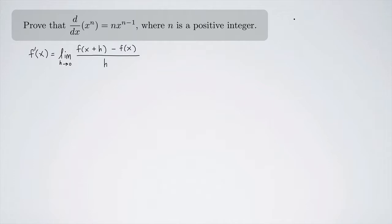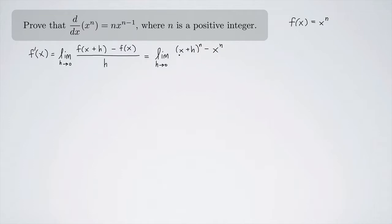Now remember, the function that we're looking at here is x to some power n, where n is a positive integer. So if I'm going to plug that in, this is going to look like the limit as h approaches 0 of x plus h to the n minus x to the n, all over h.